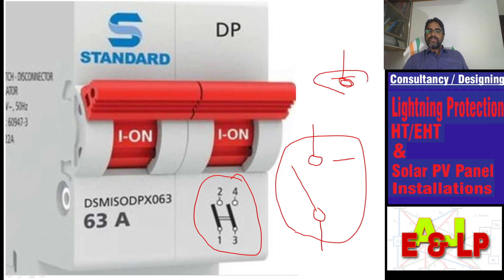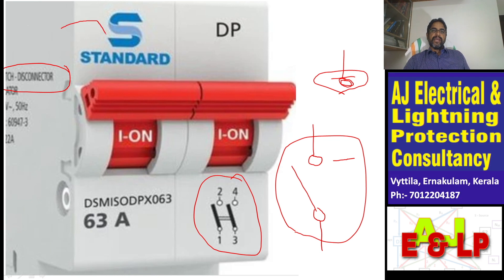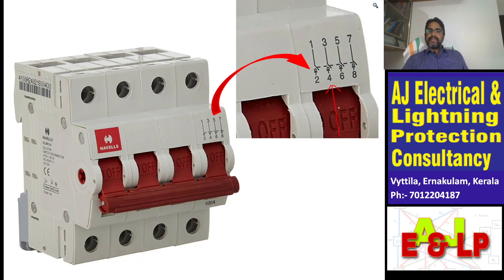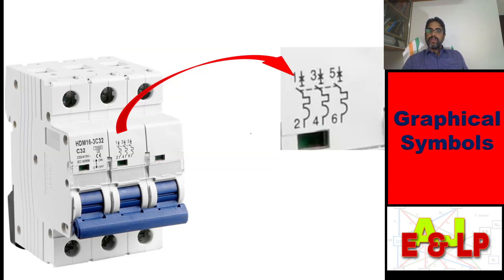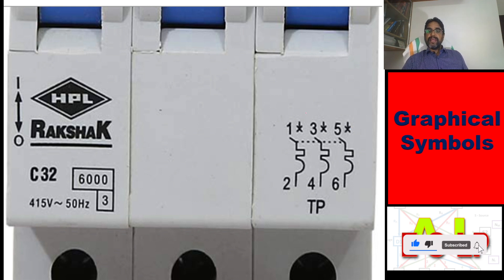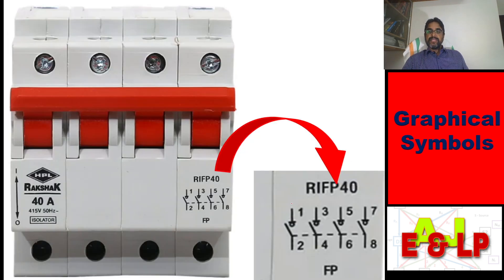The terminator should be like this — if it is there we can say it has a switch disconnector. As per the manufacturer it is a switch disconnector, but as per the symbol it is simply a switch. Here as per the symbol it is a switch disconnector — the only difference is the line is coming from the bottom part. With this symbol it is a circuit breaker with isolation duty having both trippings. Here it is a circuit breaker without isolation duty and having both trippings. Here it is a four-pole switch disconnector.